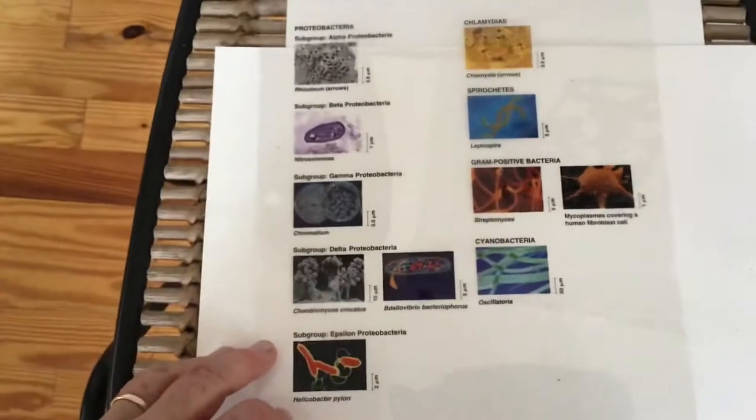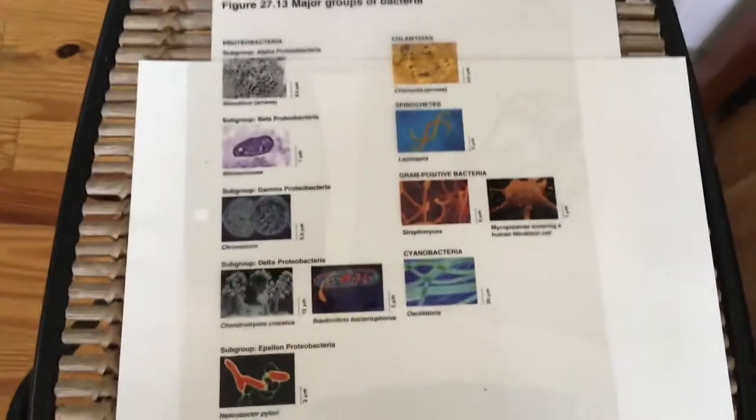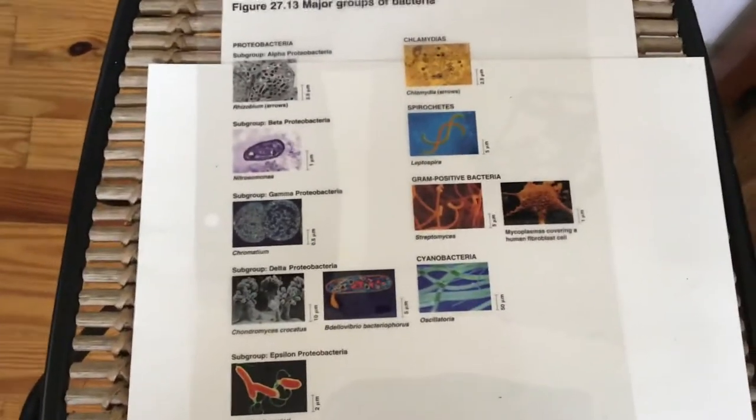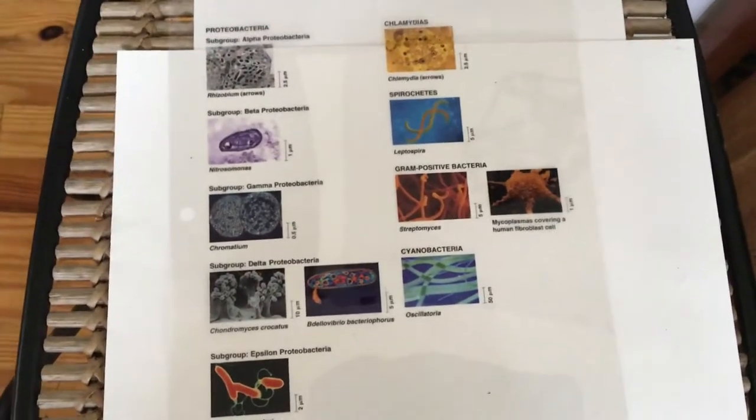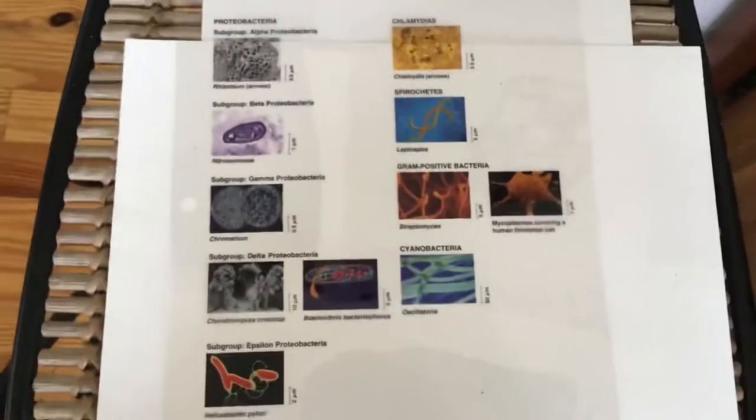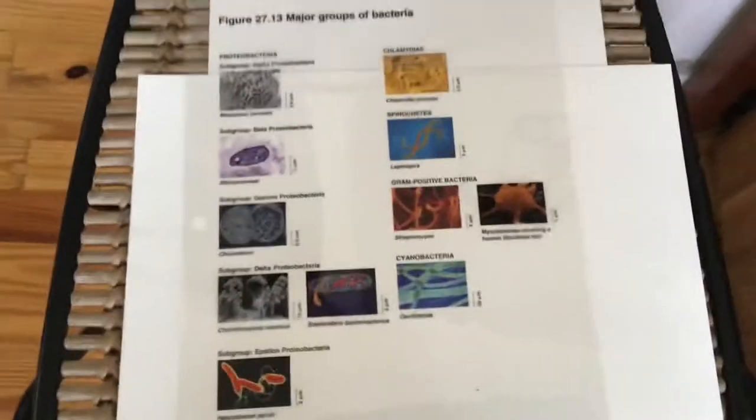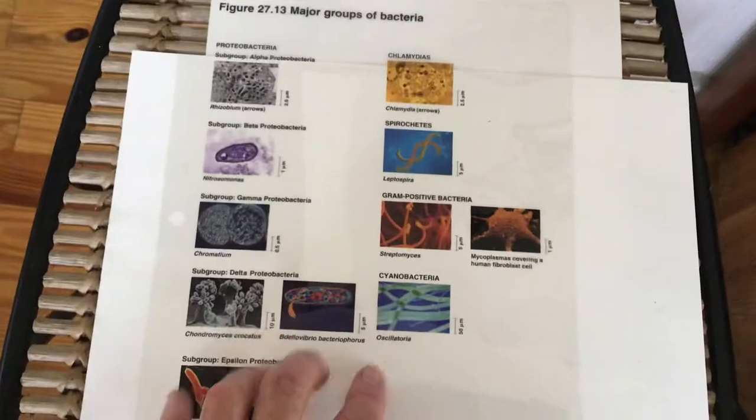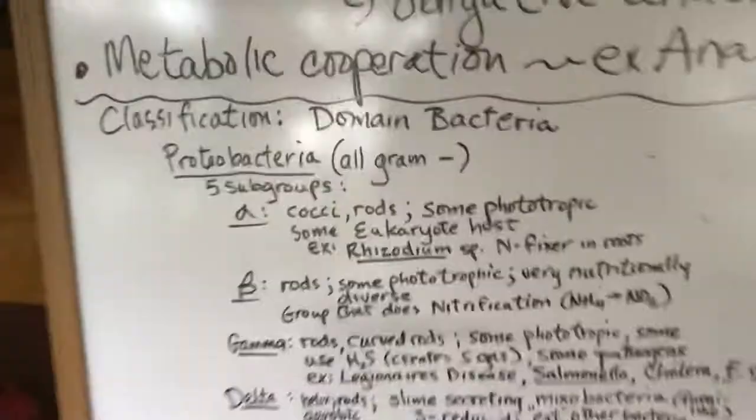I'm going to also show you that in your textbook there's a picture of some of these types. I really personally don't find the pictures all that helpful because they're kind of nondescript. They are rods, cocci, or spirillus, and they're all just very small. They're hard to see. These are just some examples of them in cells. Check that out.